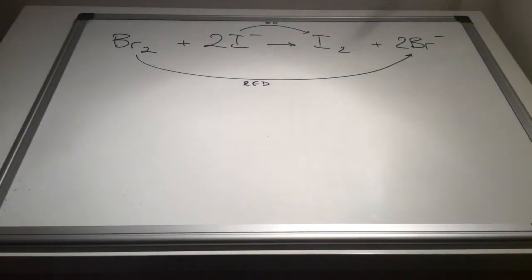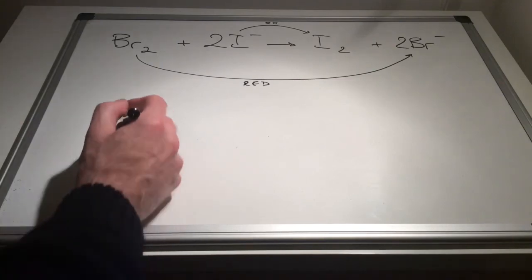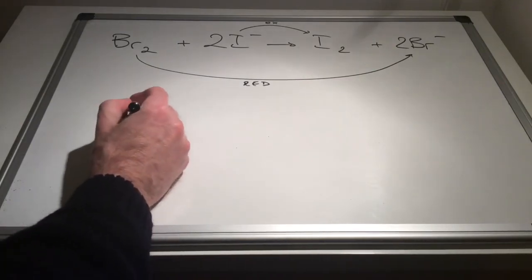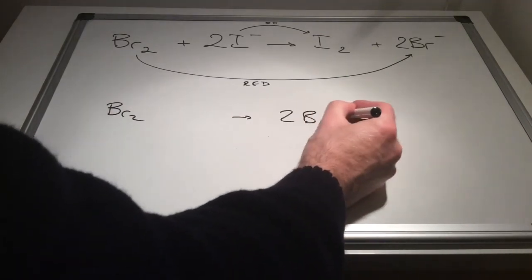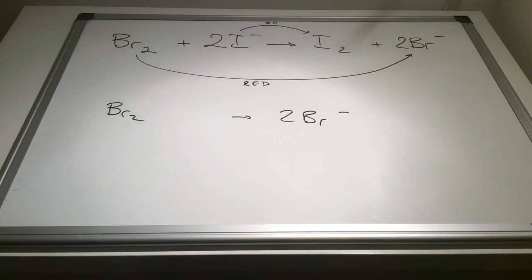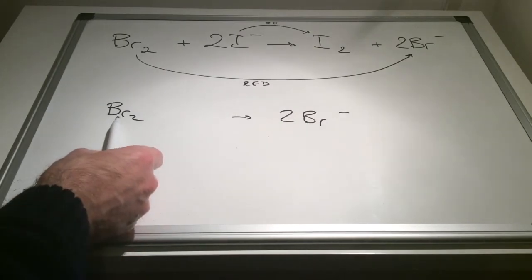So there's the overall answer. Bromine has been reduced to bromide and iodide ions have been oxidised to iodine. So let's go through why. If we look at the bromine first, the Br2 molecule has turned into two bromide ions. This is the same as what happened to the chlorine to chloride in the worked example at the start of the video. So how does this happen?